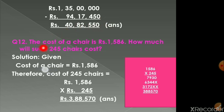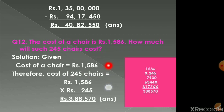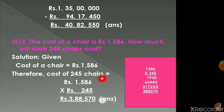Next, question number 12. The cost of a chair is rupees 1,586. How much will 245 such chairs cost? When the cost of one article is given and you need to find the cost of more articles, we find the product — that is, we multiply. Cost of one chair is rupees 1,586, therefore cost of 245 chairs equals 1586 × 245. The answer is 3,88,570.